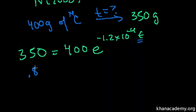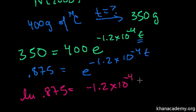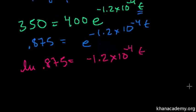So you get 0.875 is equal to e to the minus 1.2 times 10 to the minus 4t. You take the natural log of both sides. You get the natural log of 0.875 is equal to the natural log of e to anything, it's just the anything, so it's equal to minus 1.2 times 10 to the minus 4t. And so t is equal to this divided by 1.2 times 10 to the minus 4.